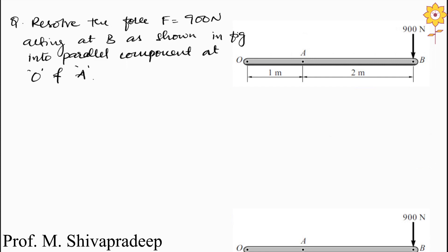So we have a force acting at B that is 900 newton, and we have to resolve this 900 newton force into two parallel forces — parallel components at point O and point A. We have to find out the unknown force acting at point A and point O.